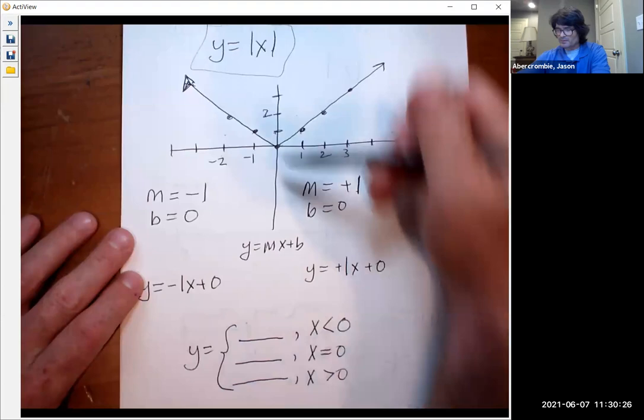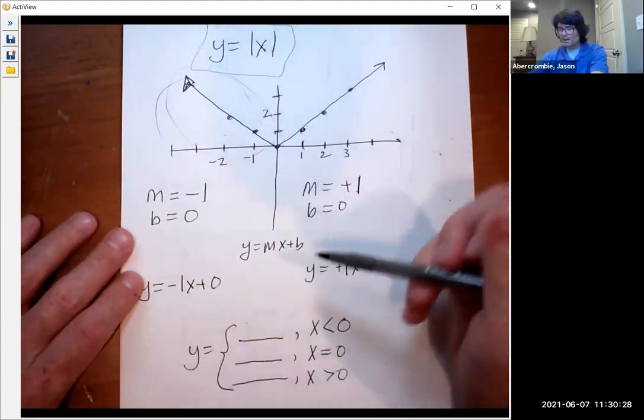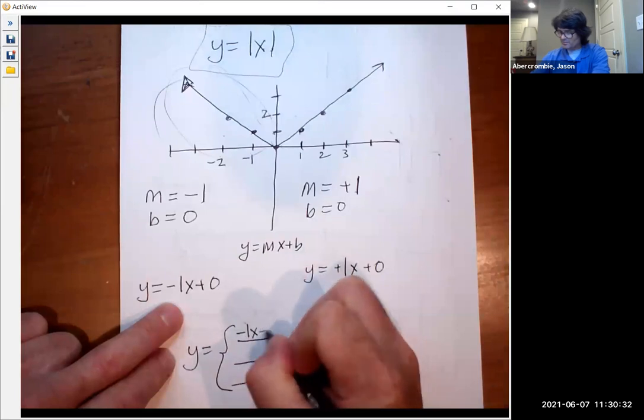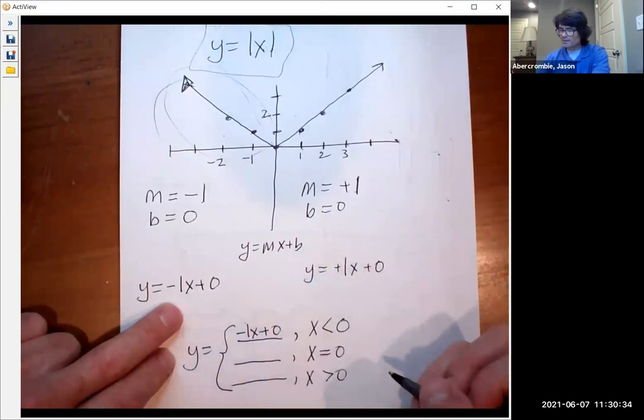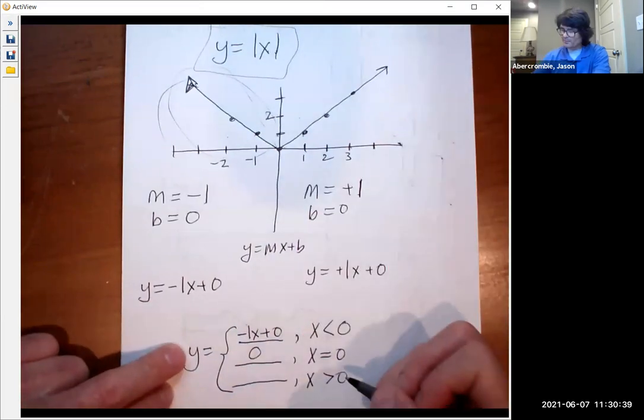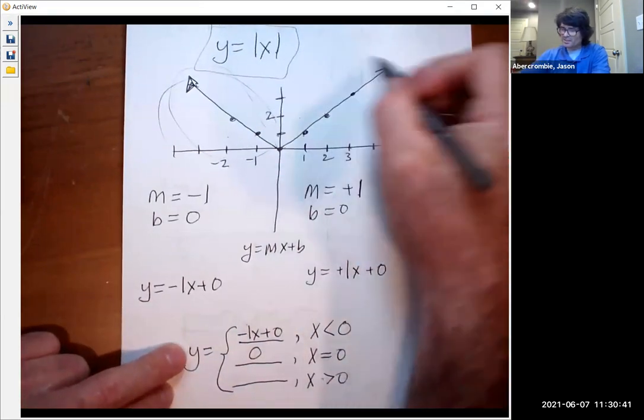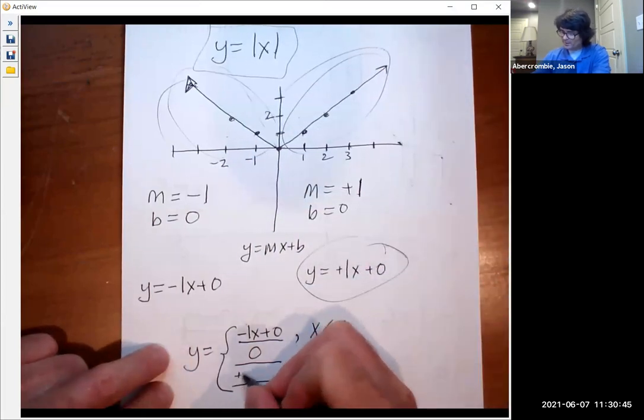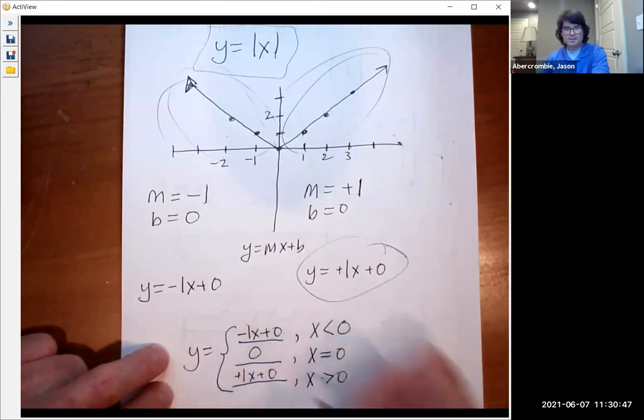So when x is less than zero, that's this part right here. And when x is less than zero, the equation is minus one x plus zero. Then when x is exactly equal to zero, then y is zero. And then when x is bigger than zero, we're looking at this section over here, the y equals positive one x plus zero like that.